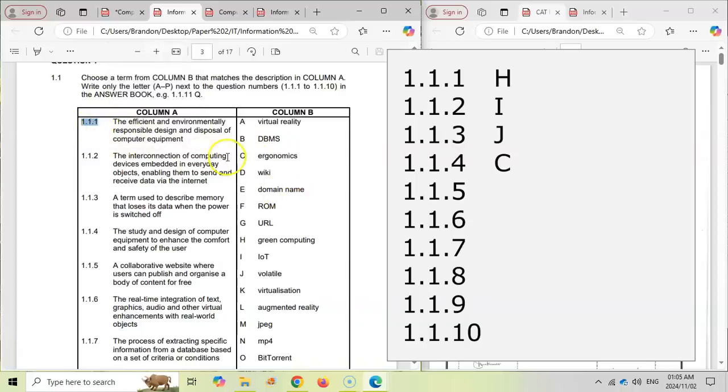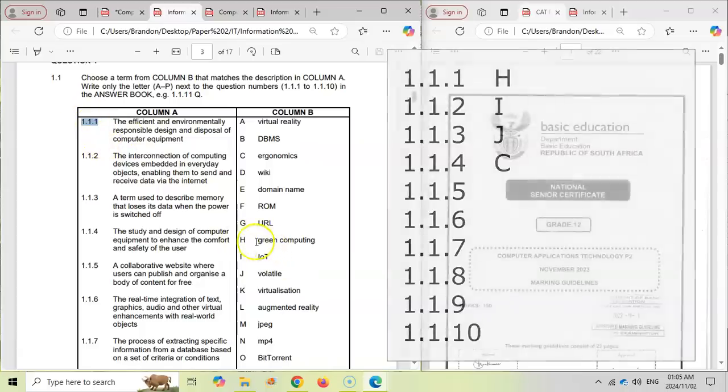So for example, 1.1.1, if you think this is green computing, then you will just put an H in your exam booklet next to 1.1.1 as your answer for this question.